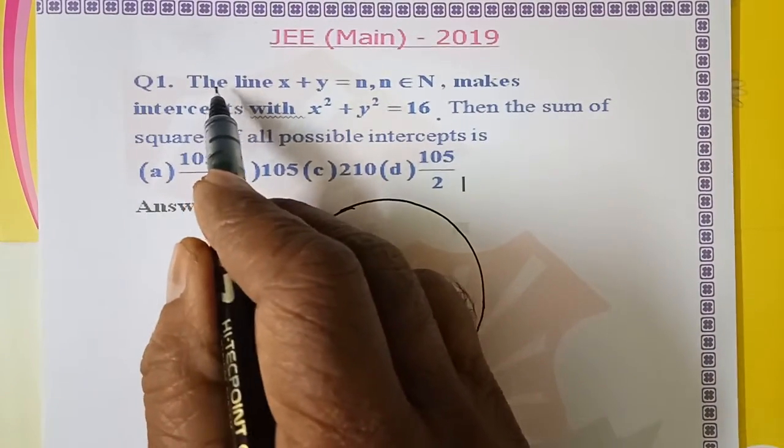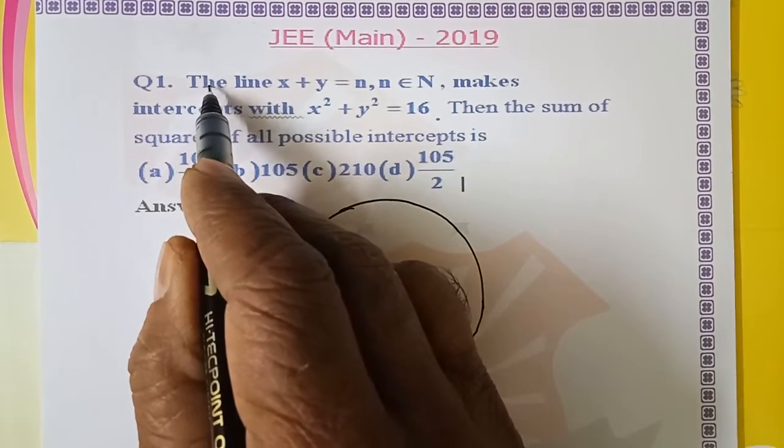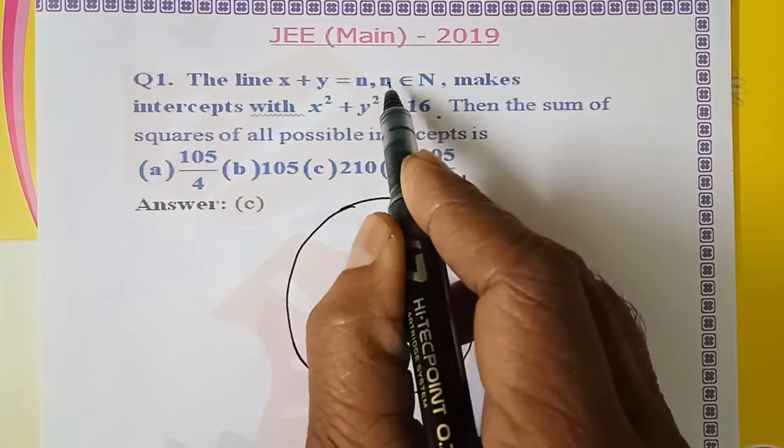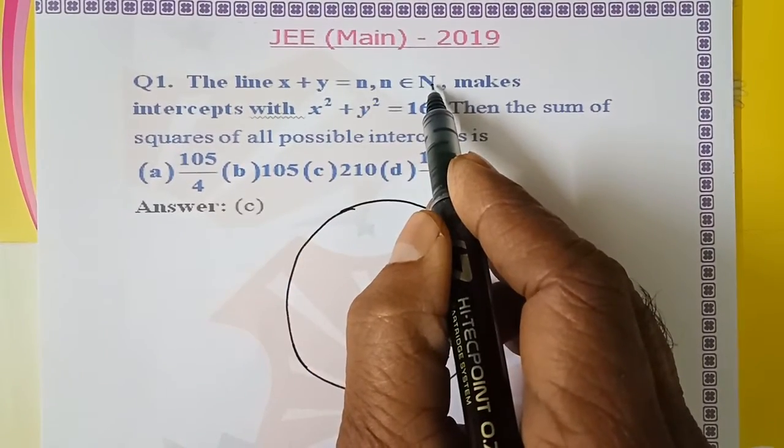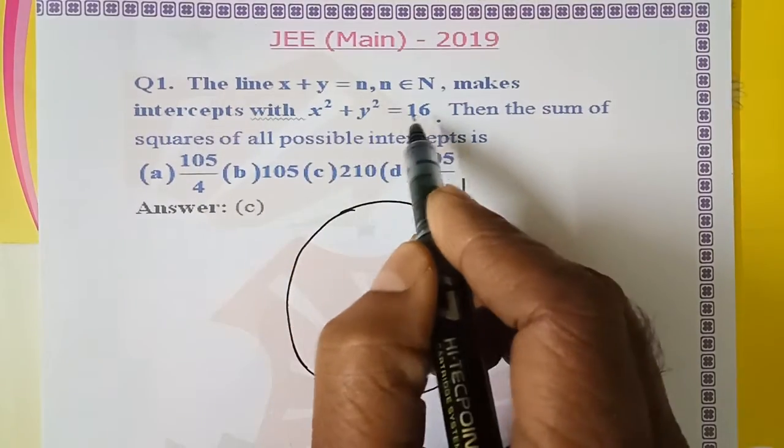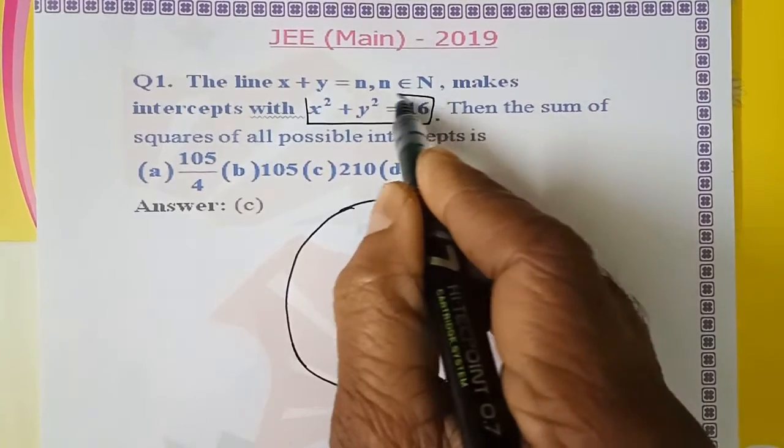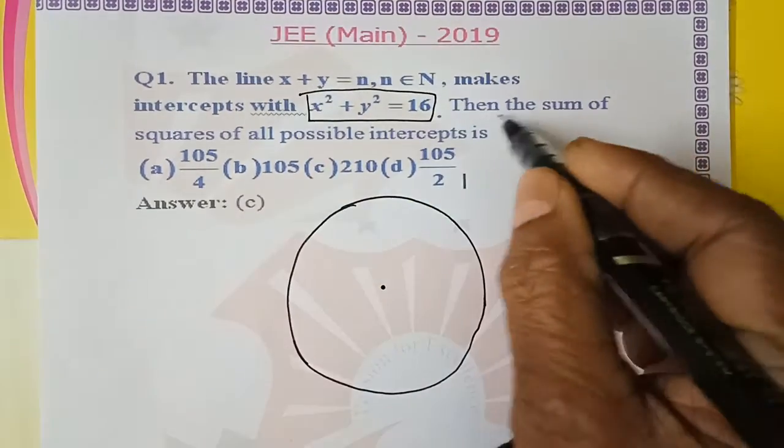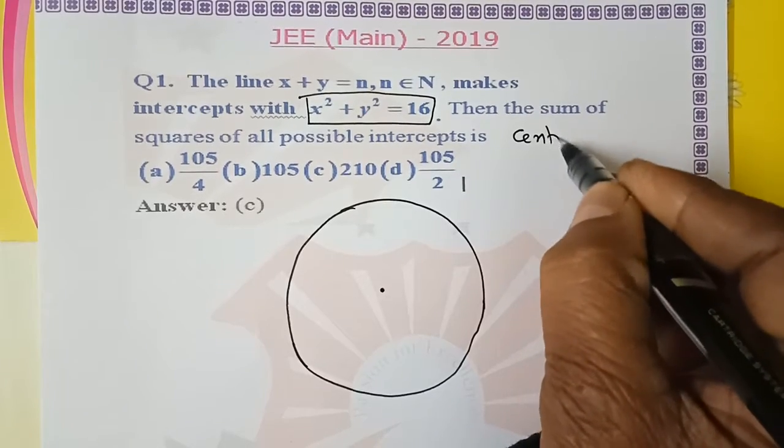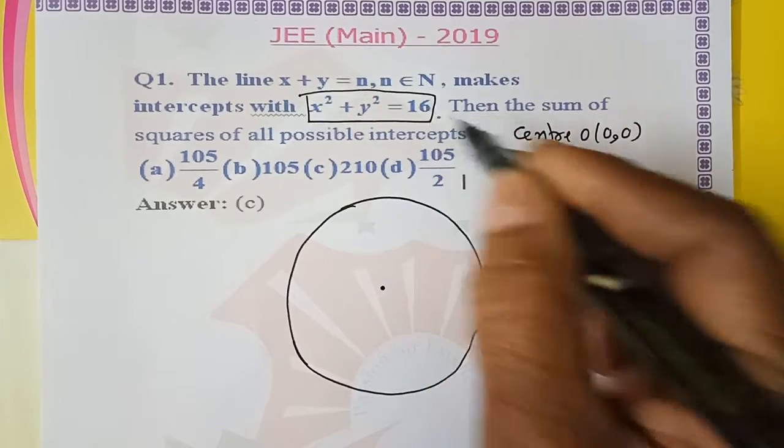The question is on circle. The line x plus y equal to n, where n is a natural number 1, 2, 3, 4, makes intercepts with the circle x squared plus y squared equal to 16. This circle has center 0, 0 and radius squared is 16.